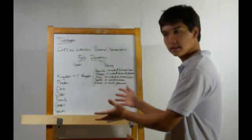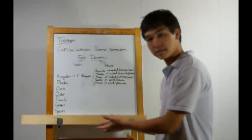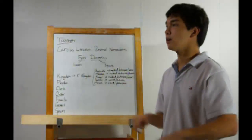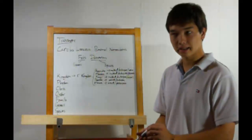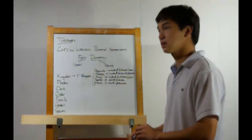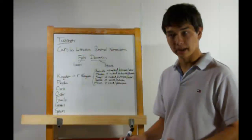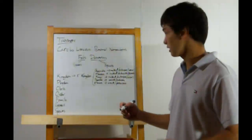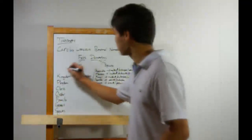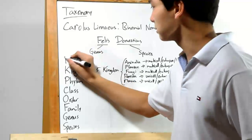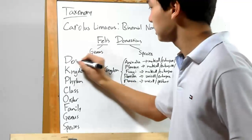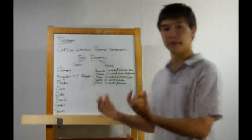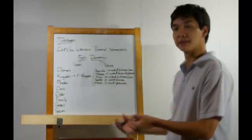Now this is, if you will, a work in progress. Some offer the eight kingdom system. Some offer the domain system. The domain system puts in an extra three domains. I think it's the most workable. The domain is, if you will, a really big kingdom — a super kingdom.